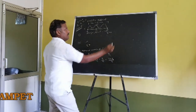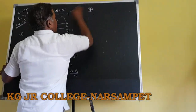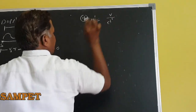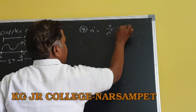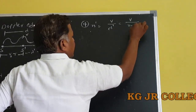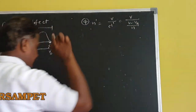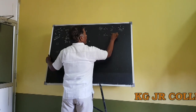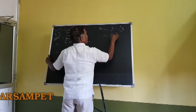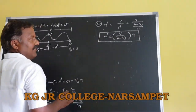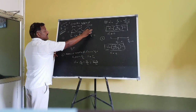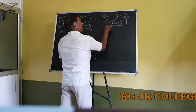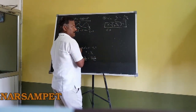Now the apparent change in frequency: N dash equals V divided by lambda dash. Substituting the value of lambda dash: N dash equals V divided by (V minus Vs)/N, so N comes to the numerator. N dash equals V/(V minus Vs) × N. This is the apparent frequency when source is in motion and observer is at rest. From this equation, apparent frequency is always greater than actual frequency N.